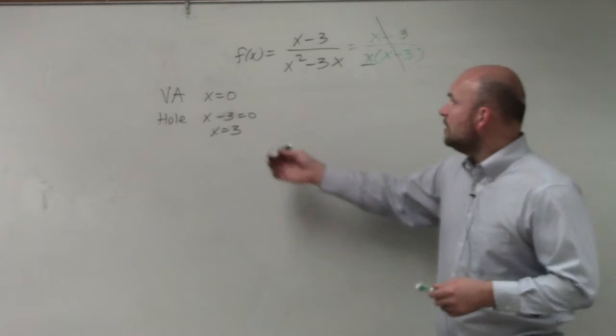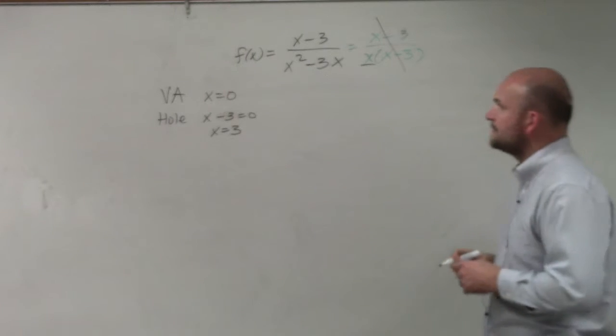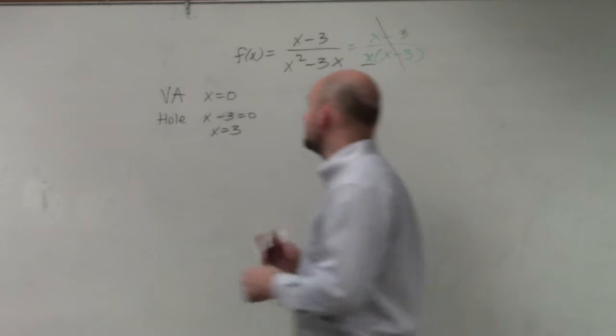X is minus 3? Well, you set your hole equal to 0 just like you would with the vertical asymptote, and x equals 3 is your hole. All right, horizontal asymptote.